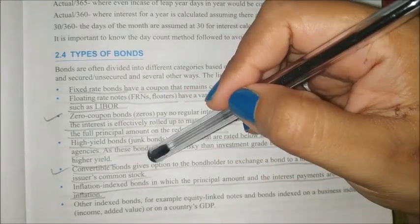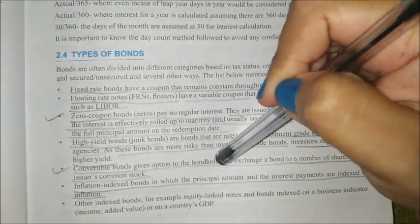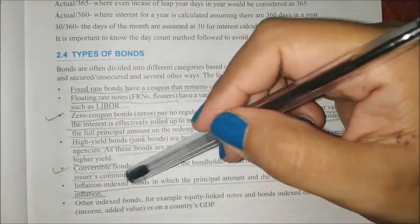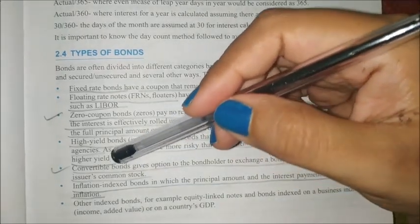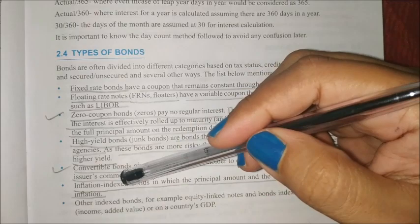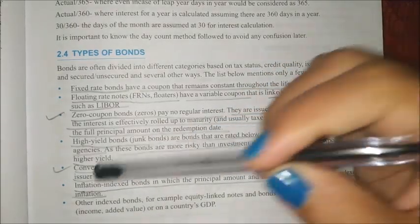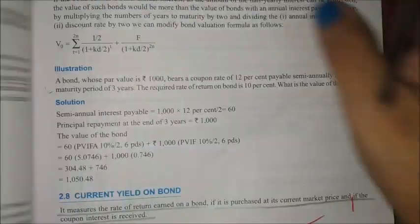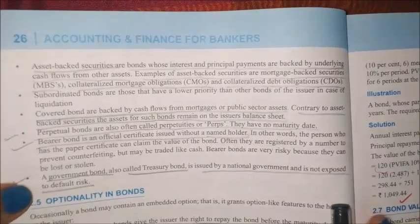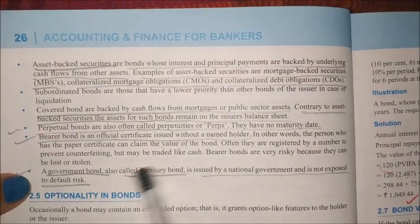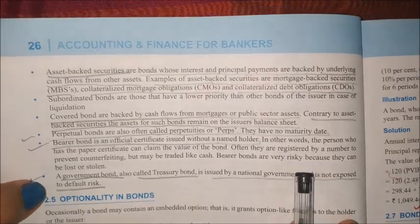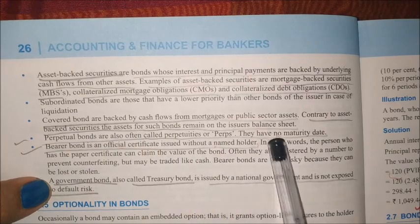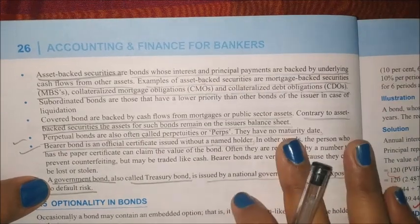Convertible bonds give the bond holder the option to convert bonds into shares. Inflation-indexed bonds are those in which the principal amount and interest payments are indexed to inflation. Government bonds are issued by the government and carry no risk. Perpetual bonds have no maturity period — you will receive coupon payments for the whole life of the bond.